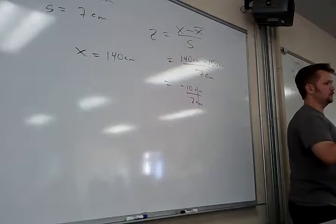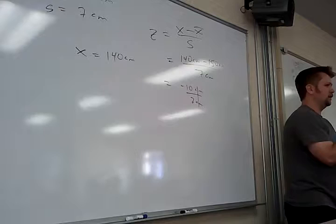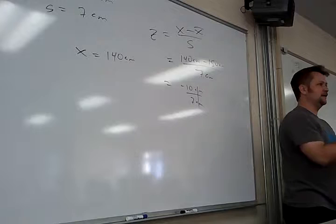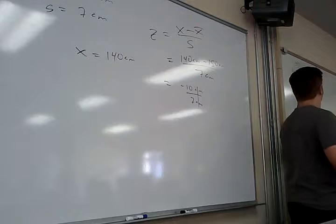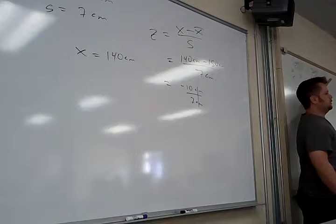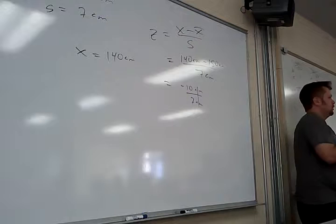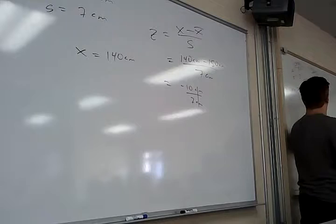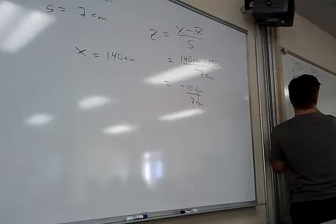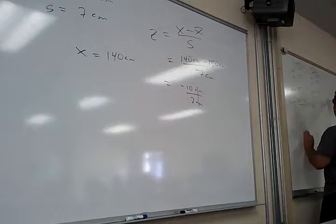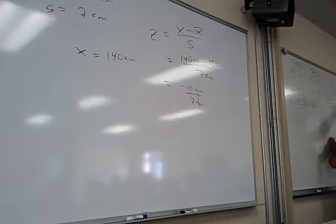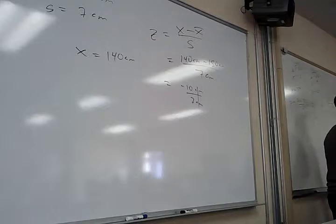We all know there are some classes where teachers just never give A's. If you get a 70, you're like, 'oh, thank God.' Z-score for stats: 74 minus 80 divided by 3 is negative 2. Z-score for bio: negative 7 divided by 8 is negative 0.875. So relatively, which one did you do better in? Bio. Bio, right.